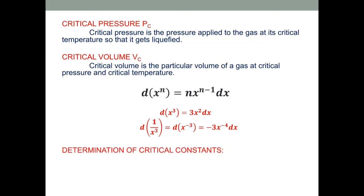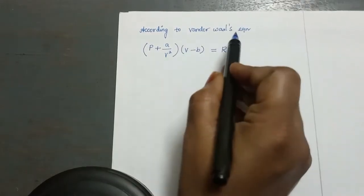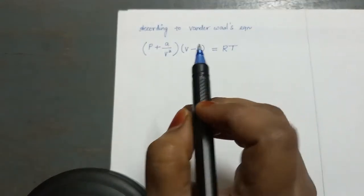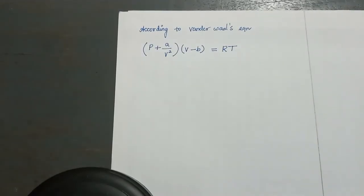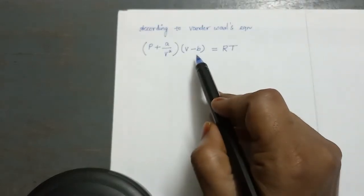Now let us determine the critical constants. At the critical point, the rate of change of pressure with volume, dp by dv, is zero. This point is called the point of inflection, where no change happens. According to the Van der Waals equation, (p + a/v²)(v − b) = RT, where p is pressure, v is volume, R is the universal gas constant, T is temperature, and a and b are Van der Waals constants.